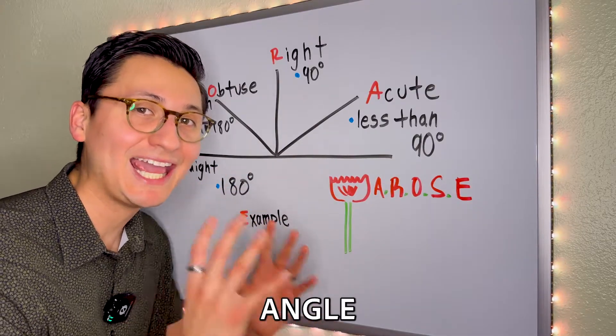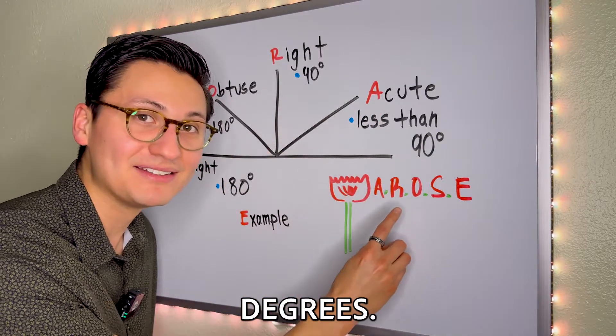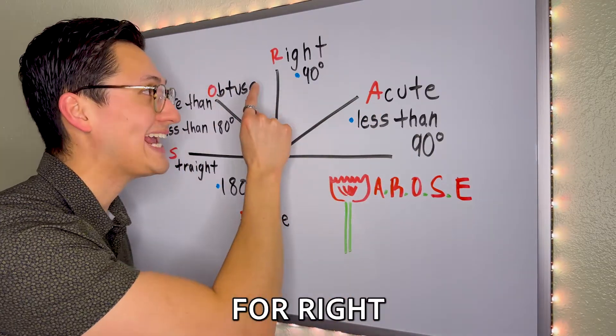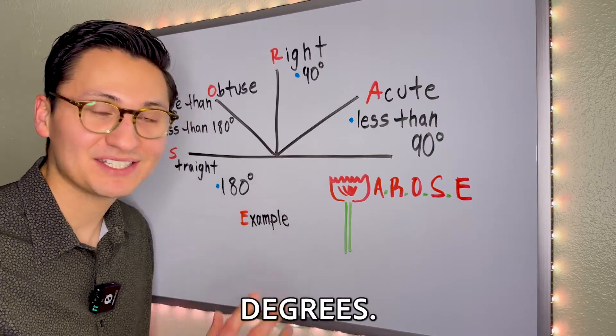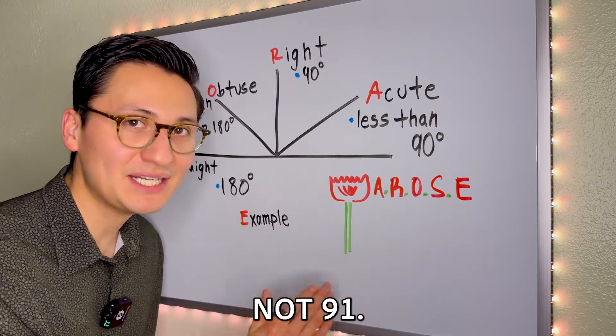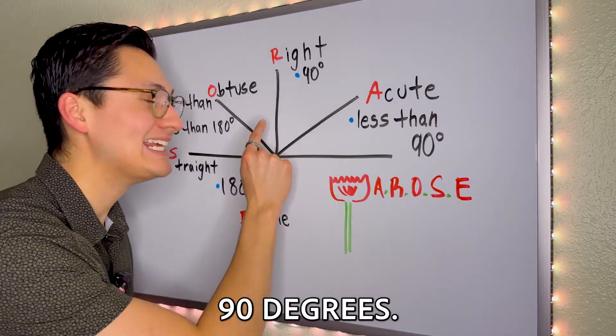It's an acute angle that is less than 90 degrees. The R stands for right angle, which is exactly 90 degrees, not 95, not 91, not 89, exactly 90 degrees.